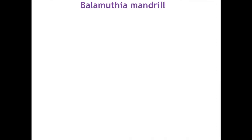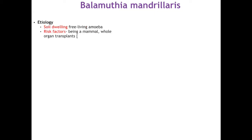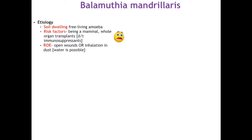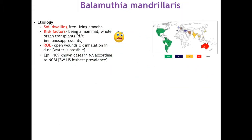Starting with Balamuthia, a soil-dwelling free-living amoeba about which not much is known. There are no specific risk factors — no rhyme or reason why one person is infected and another isn't. However, there is a growing body of evidence showing patients who undergo whole organ transplants and subsequent immunosuppression are at risk, as there was an outbreak in 2016. Route of entry can be through open wounds, inhalation into the lower respiratory tract, or water. There have been 109 known cases in North America, with the Southwest US having the highest prevalence, and a mortality rate greater than 98%.